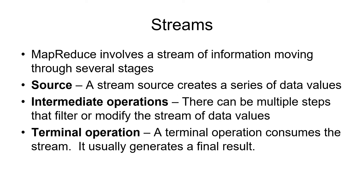MapReduce involves a stream of information moving through several stages. The data item is moved through several functions, one after another. It starts with a source, which is a method that creates a stream of data values. Then it goes through one or many intermediate operations that take the data values and filter or modify them, converting them to other values and moving them to the next stage. Finally, there's a terminal operation that consumes the stream and generally produces some sort of final result.